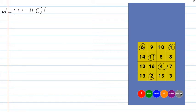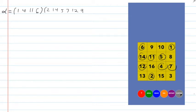I locate the 1 — it's in position 4. Then I locate the 4, and it's in position 11. I locate the 11 — it's in position 6. And 6 is in position 1, so that ends the first cycle.